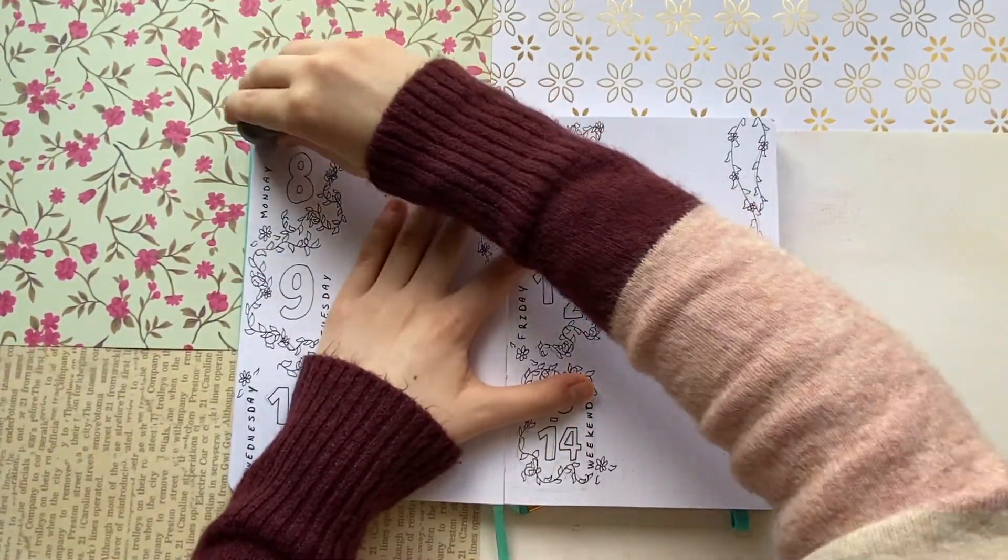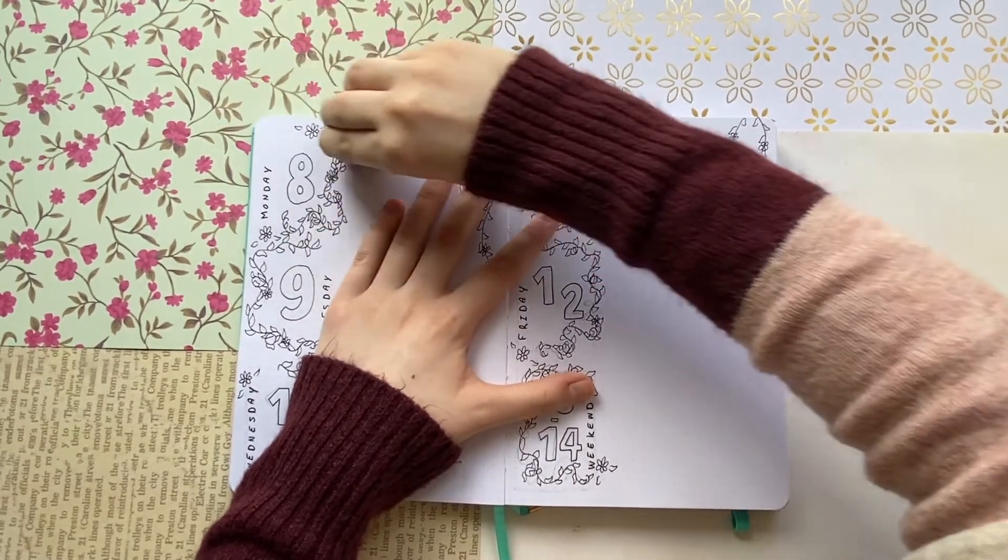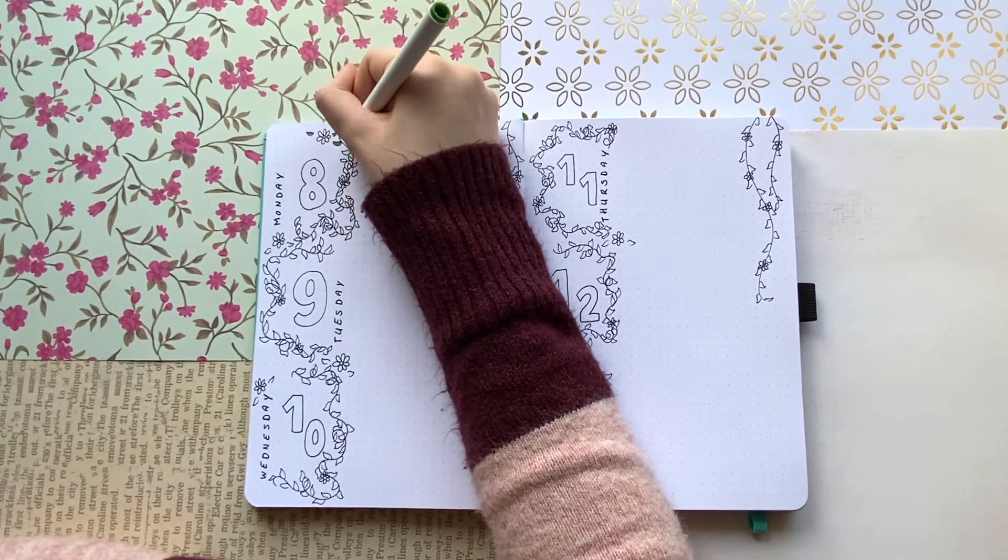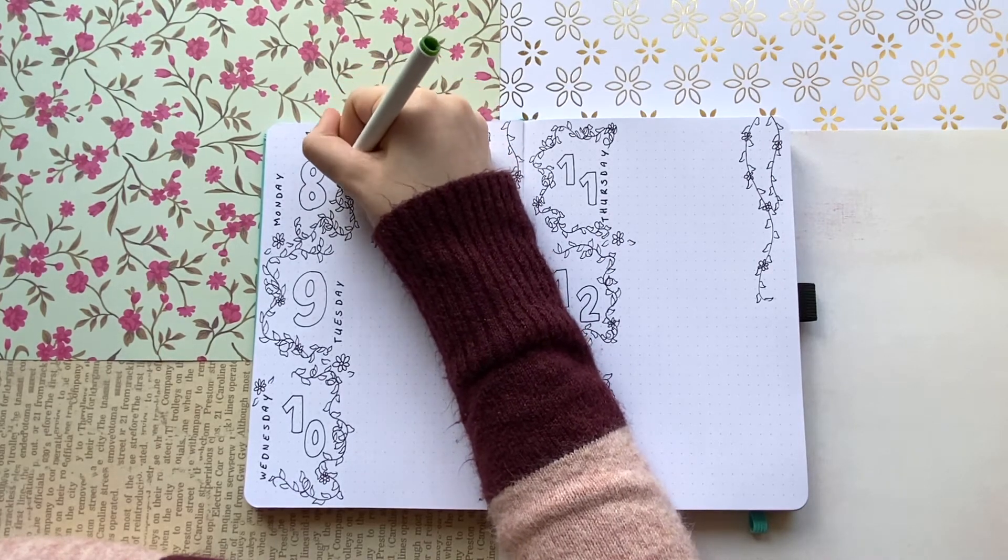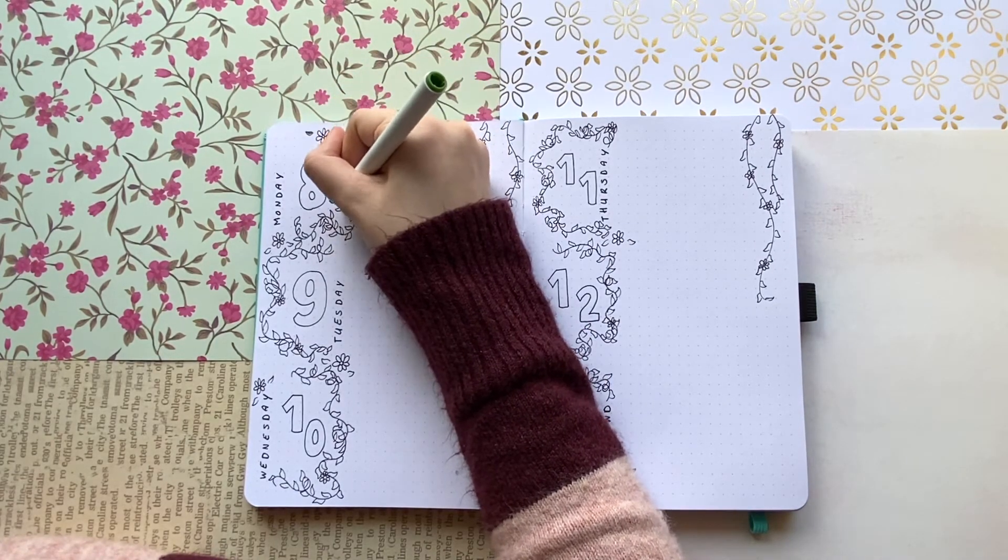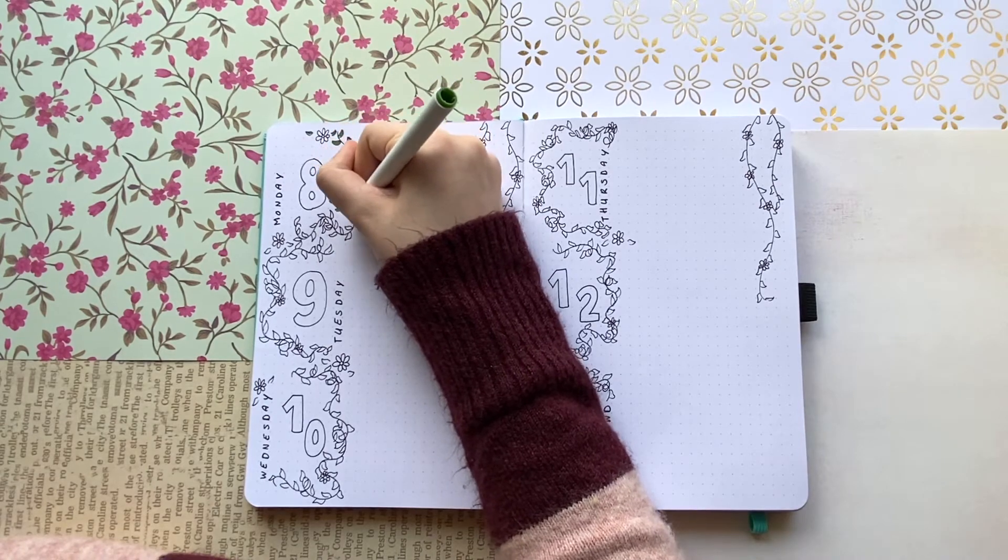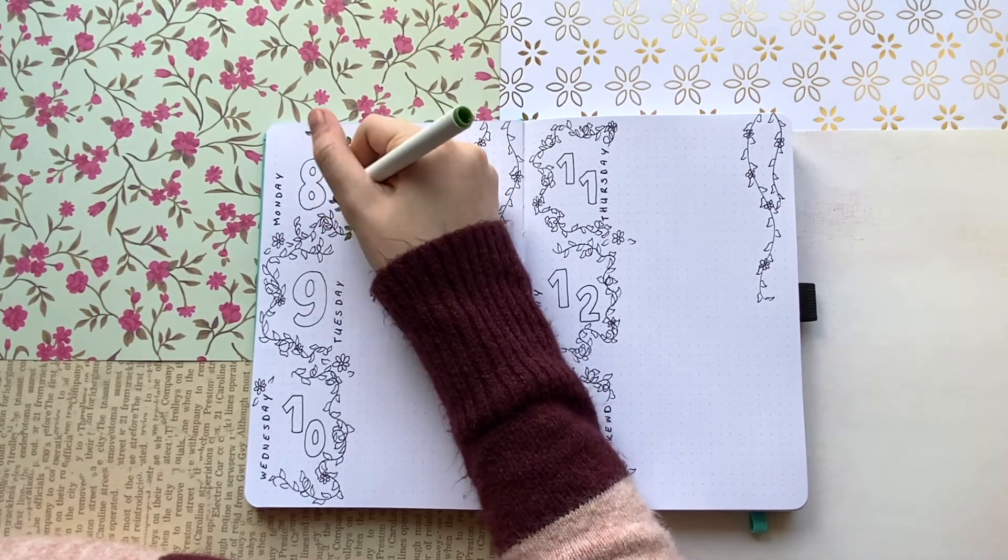With again my favorite tool ever, my kneaded eraser, which you totally need to get one if you don't have one because it works amazingly. And then I went in with my Crayola Super Tips. Honestly I think that it looks amazing in the end, but this part was actually really tedious because there were so many little tiny leaves.